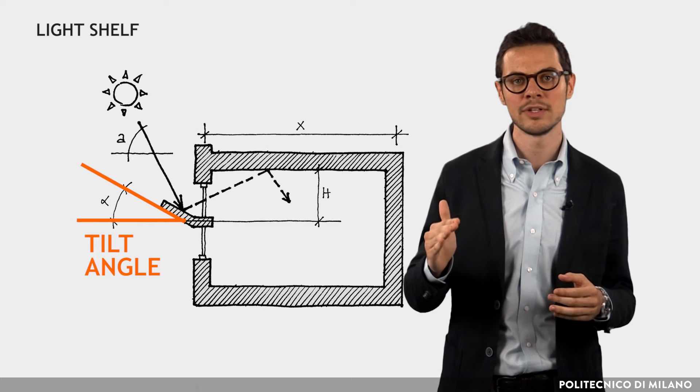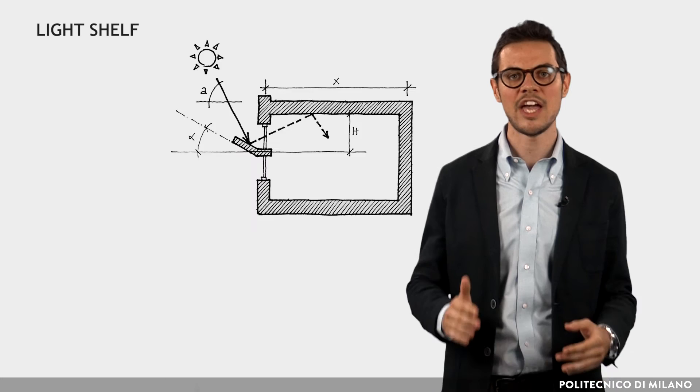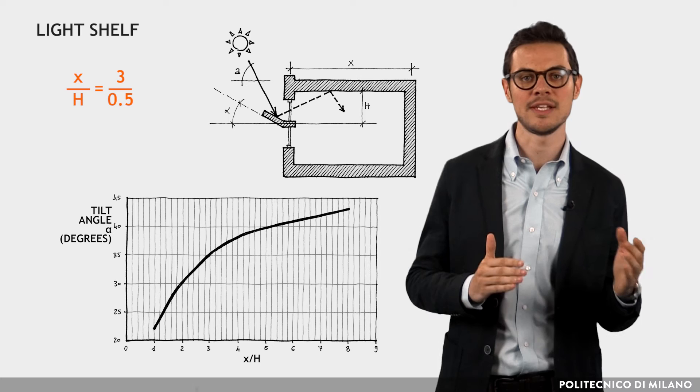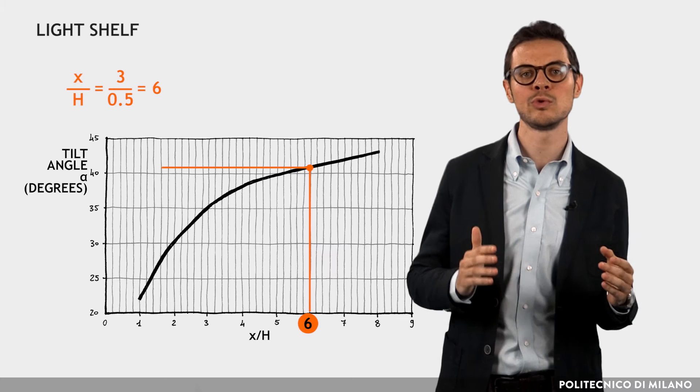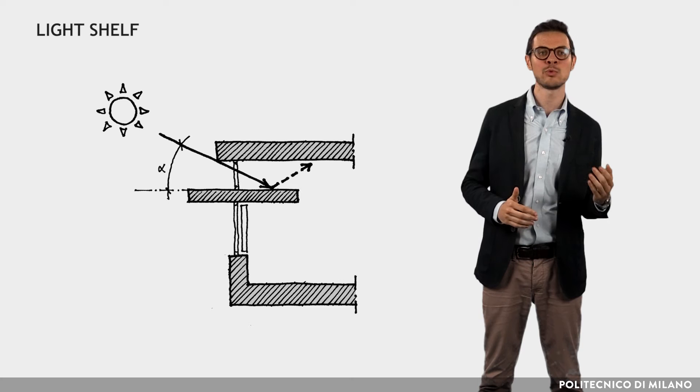The optimum tilt angle at latitudes near the equator depends on the ratio of x over h. For example, if h is 0.5 meters and the width of the room x is 3 meters, the optimal tilt angle is almost equal to 40 degrees.